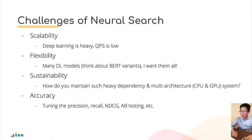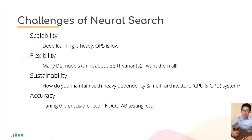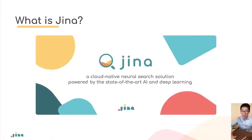Finally, there is the accuracy problem. A lot of people see deep learning as a black box and don't know how to tune it accurately. Those are the four challenges people face when building neural search for production. GINA provides a solution — a one-stop solution for solving all these problems.